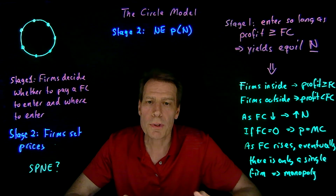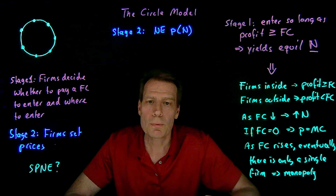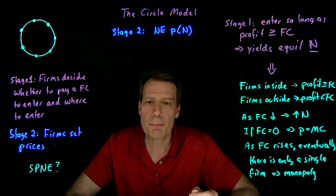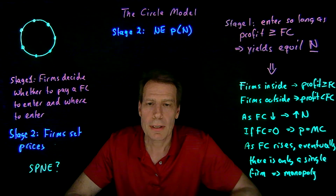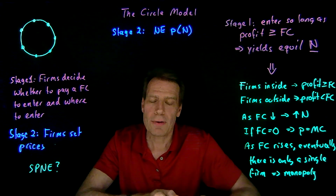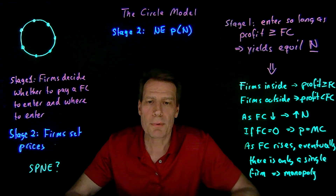We can span the whole spectrum between monopoly and perfect competition, just as we could with quantity competition — when we increase the number of firms, eventually as that number gets really large, we converge to the perfectly competitive outcome of price equal to marginal cost.